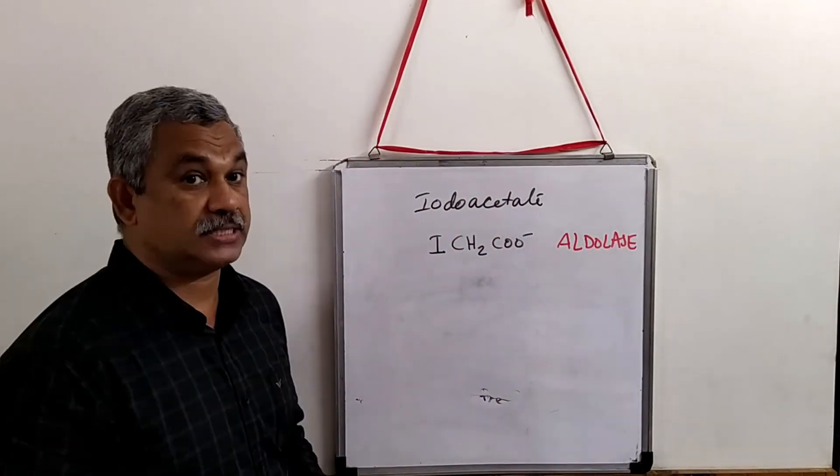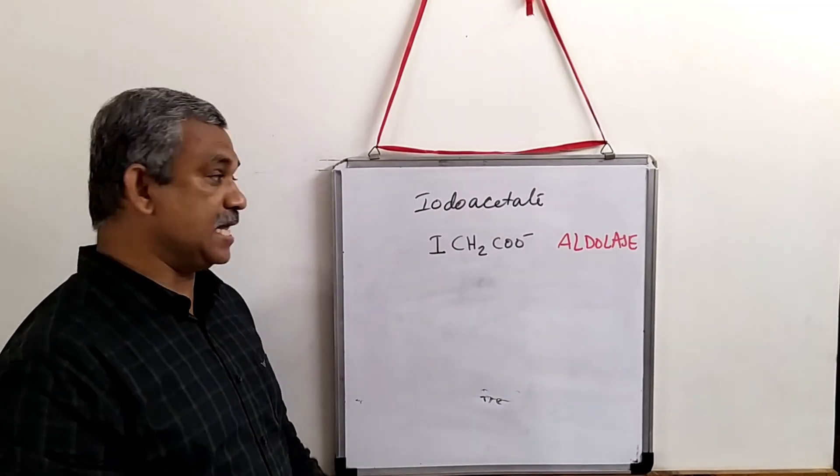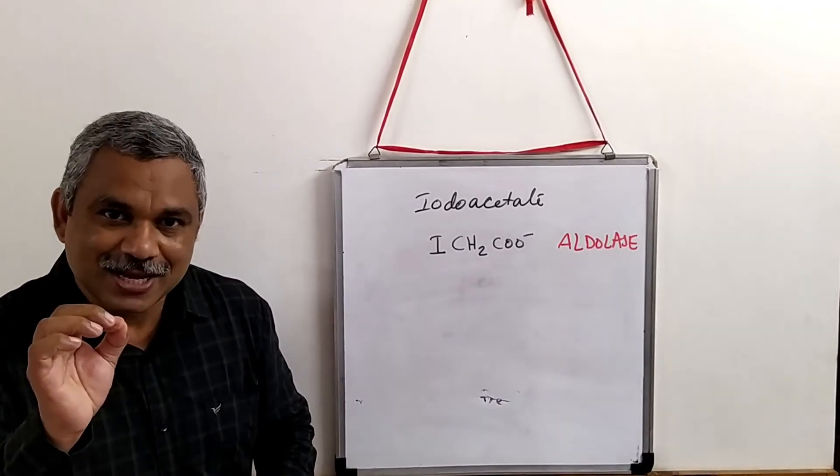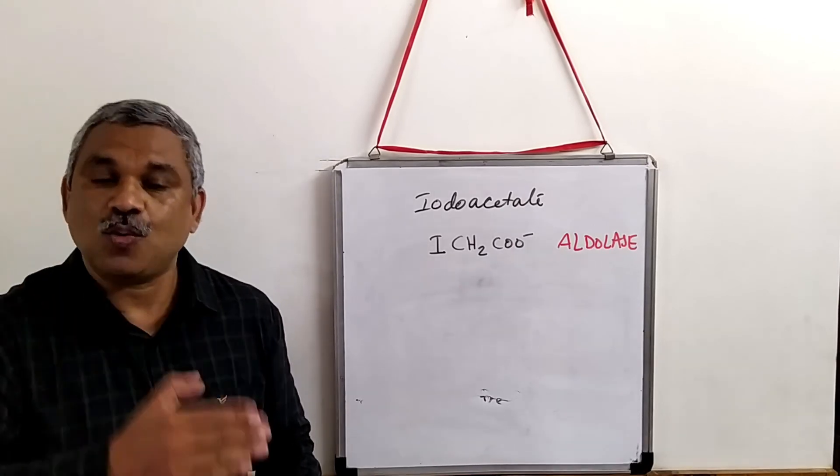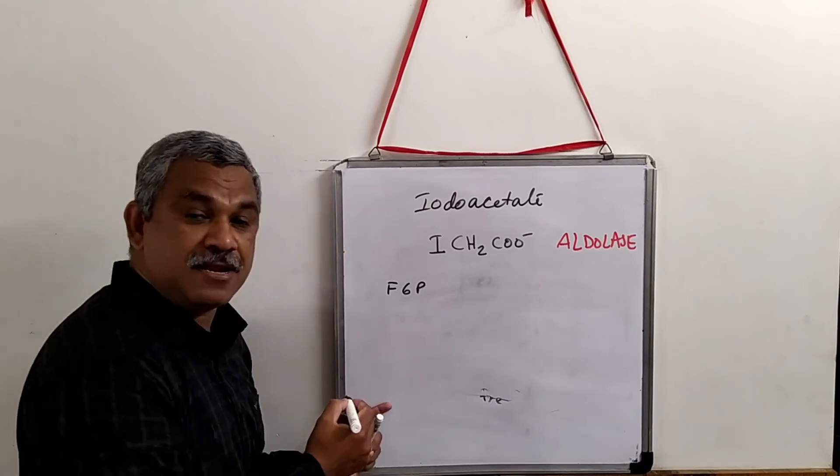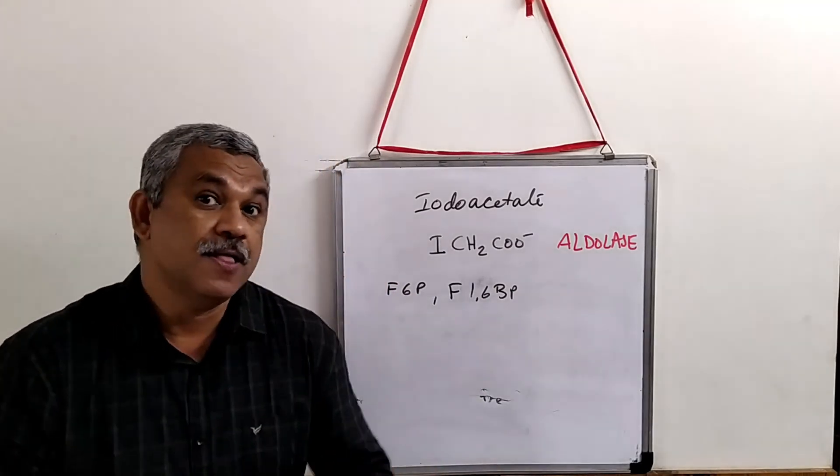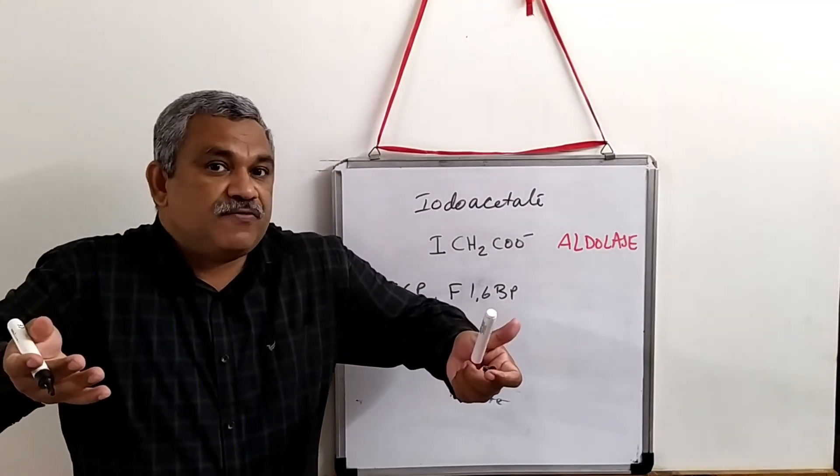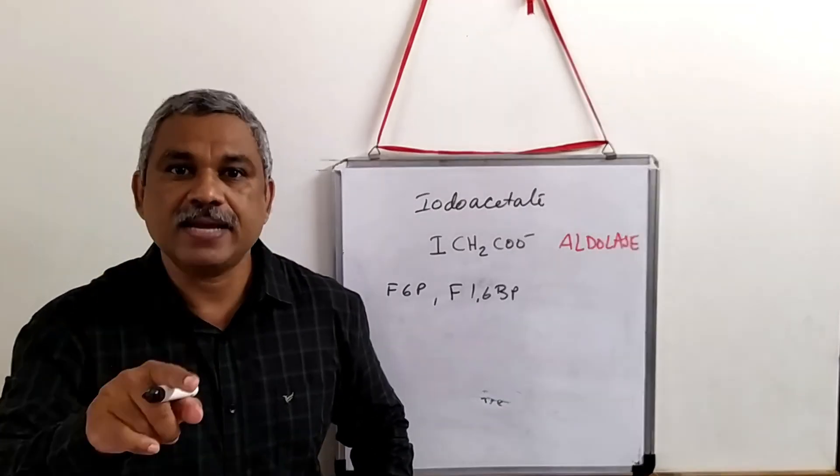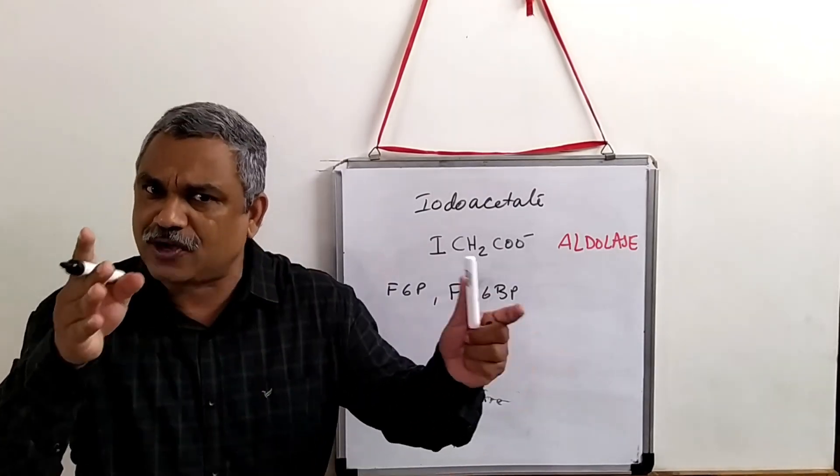When it inhibits aldolase, what happens? All the intermediates prior to aldolase get accumulated. Which intermediates? You will have fructose 6-phosphate and fructose 1,6-bisphosphate as intermediates. The concentration of these intermediates keeps increasing, so you come to know that enzyme number four, the aldolase enzyme, is inhibited and these are the first few products formed in the pathway.